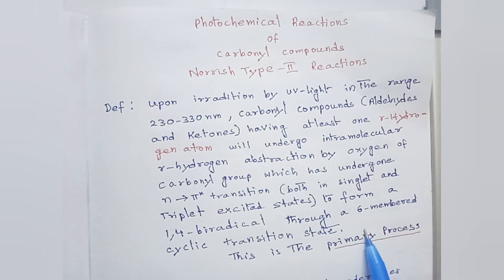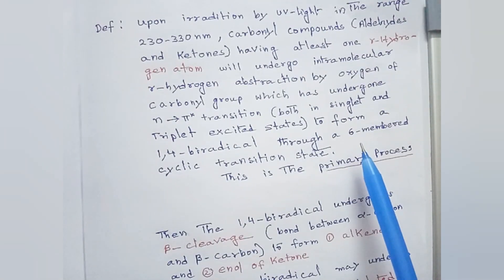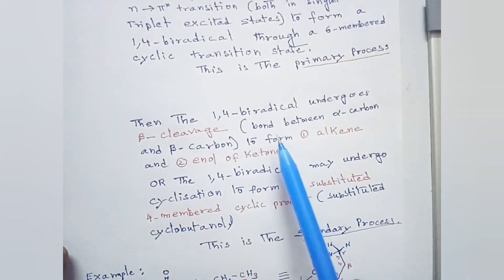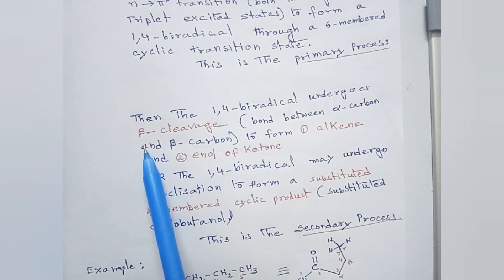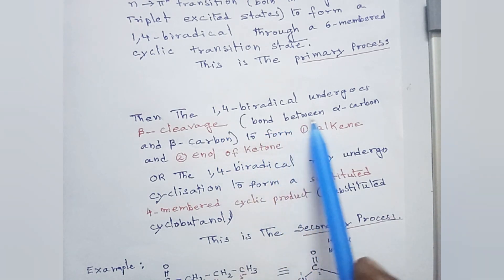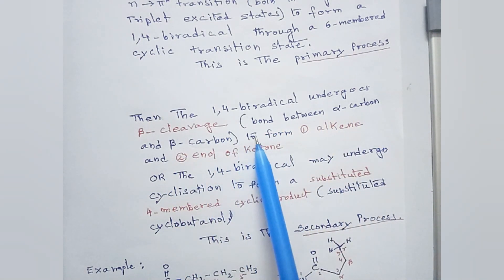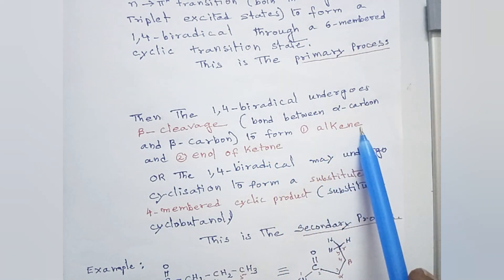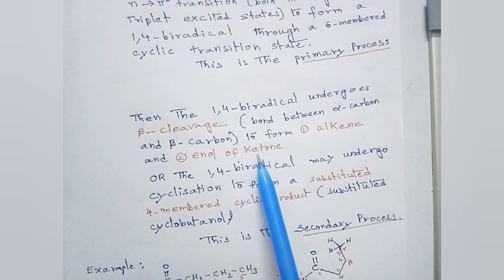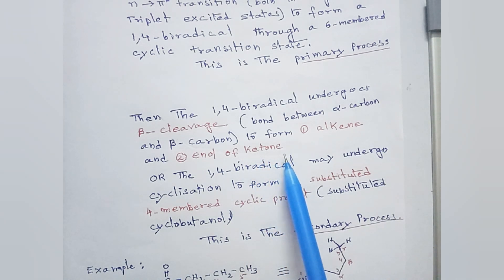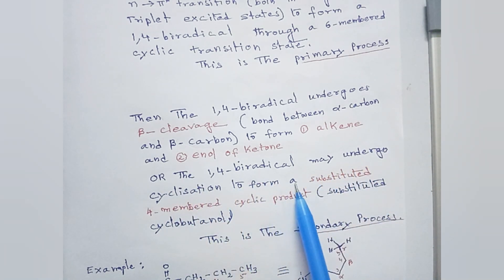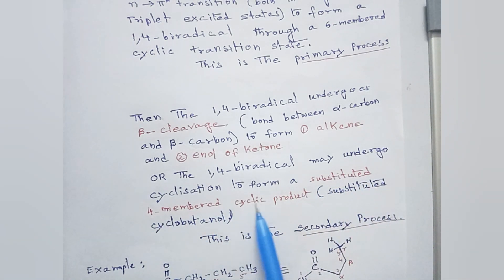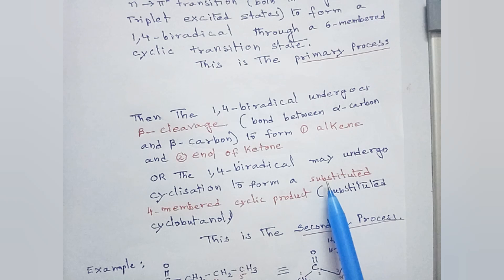The carbonyl compounds will form a biradical in the primary process. Then, the 1,4-biradical undergoes beta cleavage — that is, the bond between the alpha carbon and the beta carbon — to form an alkene and enol of a ketone. Or, the 1,4-biradical may undergo cyclization to form a substituted four-membered cyclic product, that is, substituted cyclobutanol. This is the secondary process.